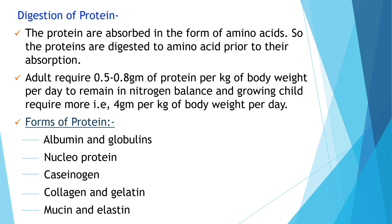Digestion of protein: proteins are absorbed in the form of amino acids, so proteins are digested to amino acids prior to absorption. Adults require 0.5 to 0.8 grams of protein per kg of body weight per day to remain in nitrogen balance; growing children require more — about 4 grams per kg of body weight per day. Forms of proteins include albumins, globulins, nucleoproteins, caseinogens, collagen, gelatin, mucin, and elastin.